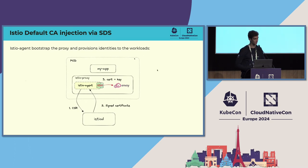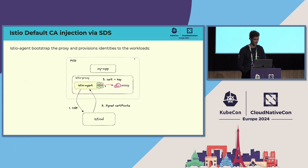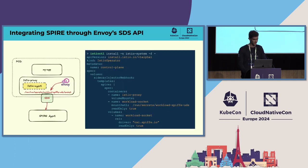Now let's see how Istio and SPIRE integrate together. First, how does Istio get certificates for each workload? Each workload in Istio contains two containers: the application container and the Istio proxy container. The Istio proxy consists of the Istio agent and Envoy. The Istio agent bootstraps the proxy and provisions identities by making a certificate signing request to Istiod. Istiod signs the certificate, and the Istio agent and Envoy communicate via the Secret Discovery Service, which is a Unix domain socket.